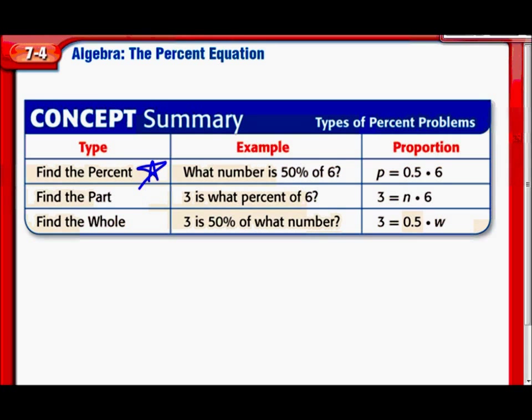And see the setup? It's just like I was doing. So what number, there's your variable, is, there's your equal sign, 50%. Now here the book changed it to 0.5, of, that's times, 6. And there's the 6. Perfect.